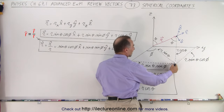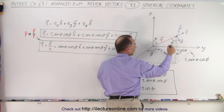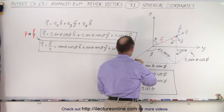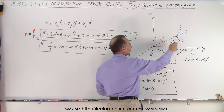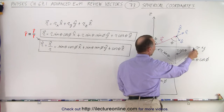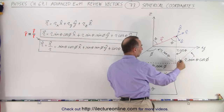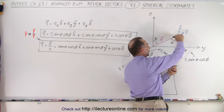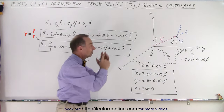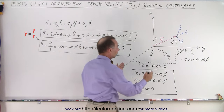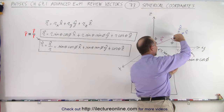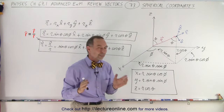The distance from the projection to the y-axis represents the x-coordinate of that point, and the distance from the projection to the x-axis represents the y-coordinate. So we have the y-distance, the x-distance, and the distance from the xy-plane up to the point in the z-direction — three distances: x, y, and z.